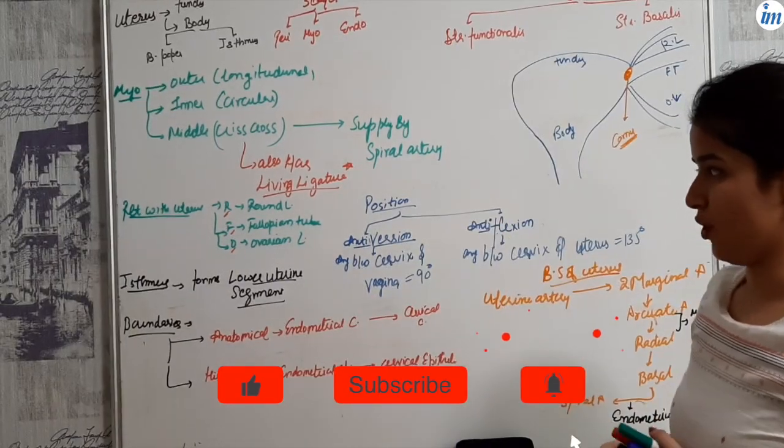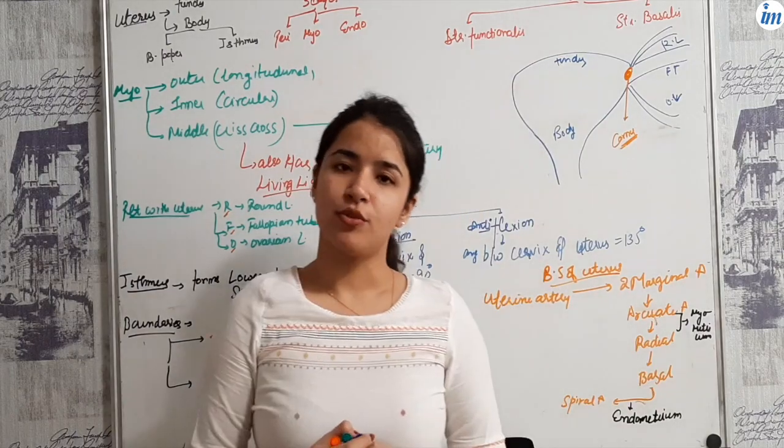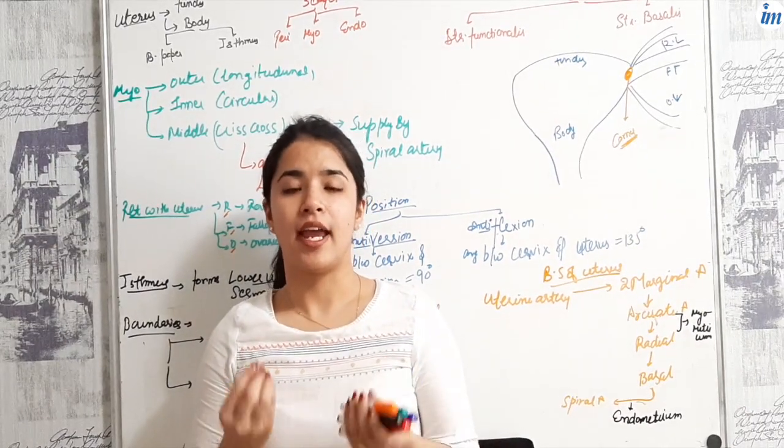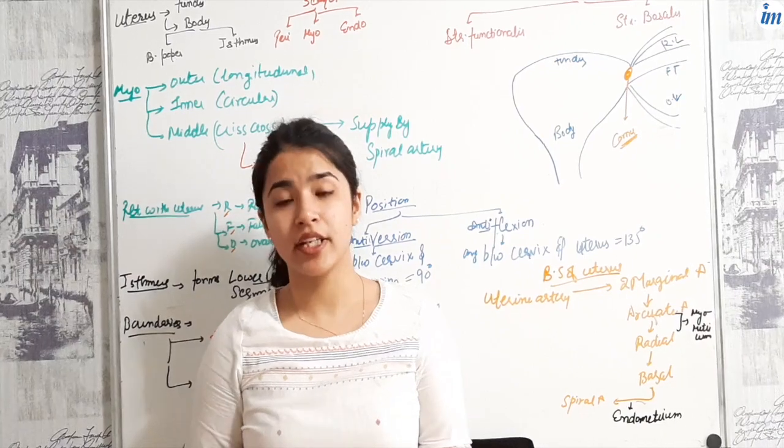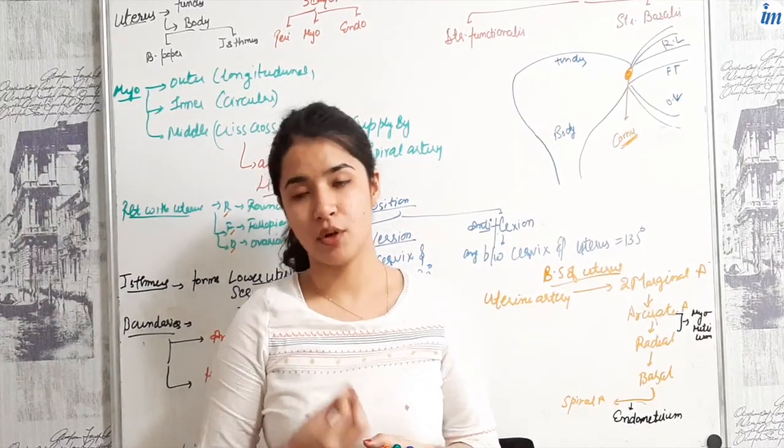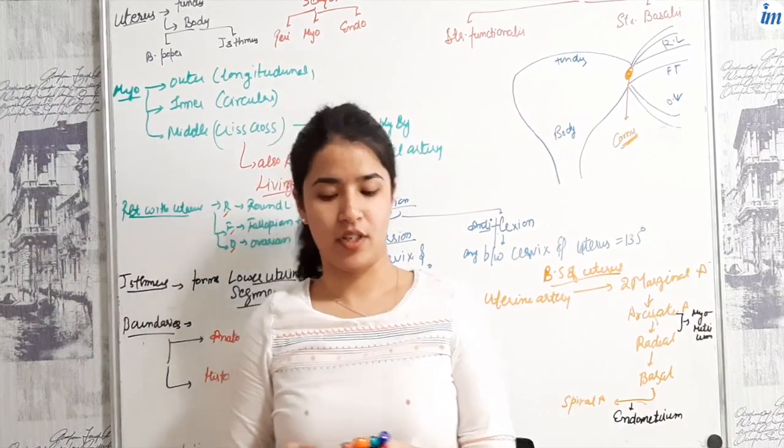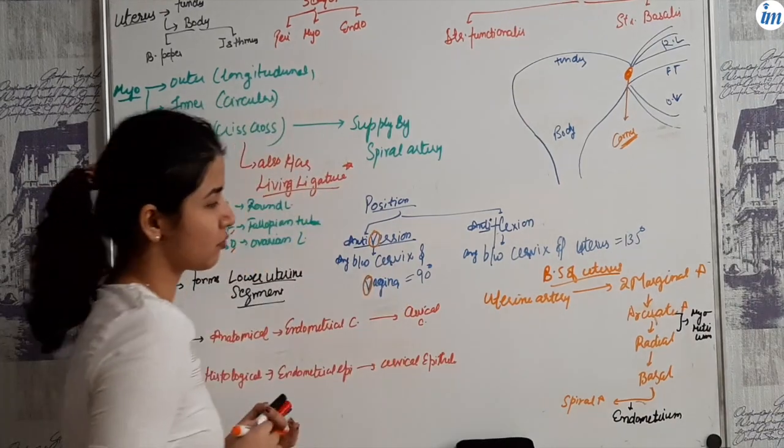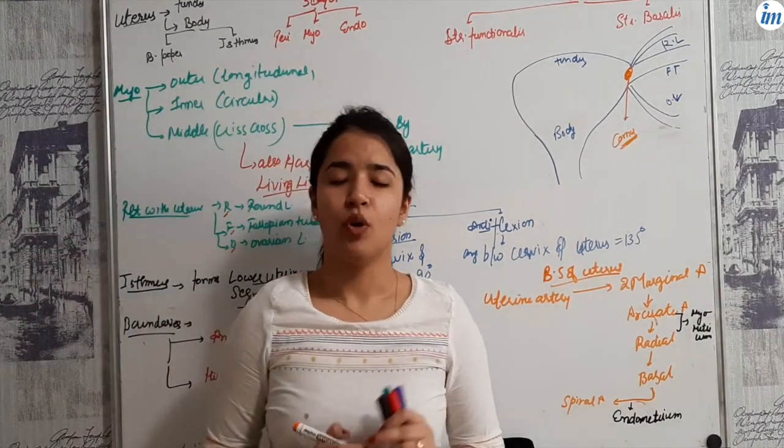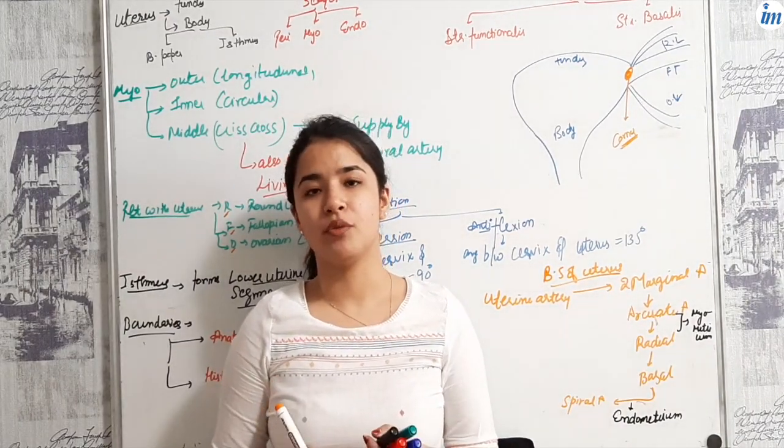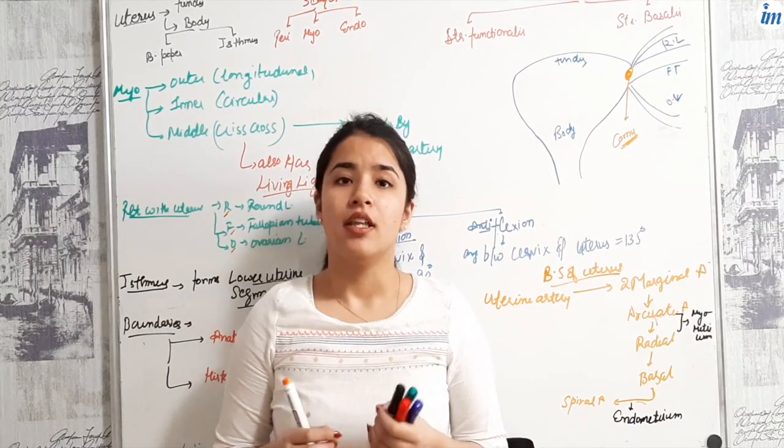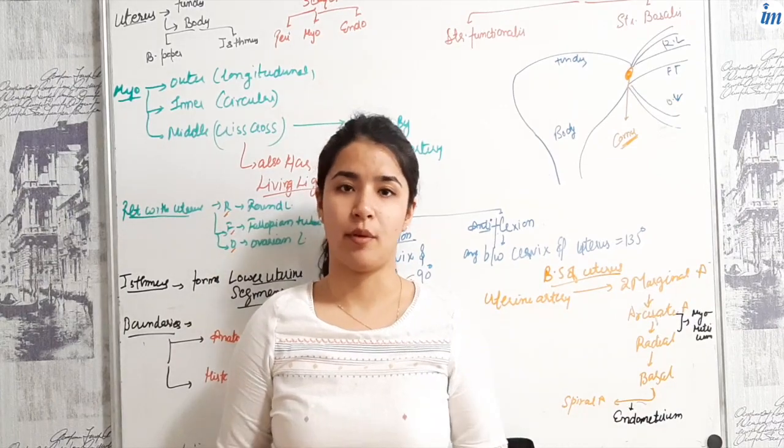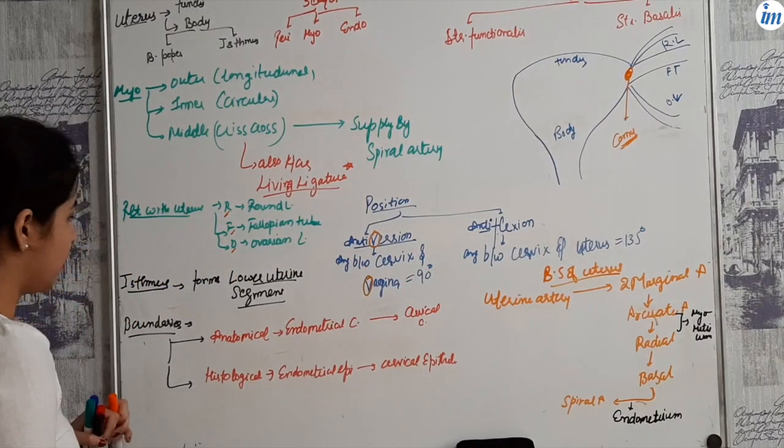About the position of the uterus. Generally, the most common position is anteversion and anteflexion position. Anteversion is an angle between the cervix and the vagina, which is 90 degrees. Anteflexion is an angle between cervix and the uterus, 135 degrees. You can remember: V for version and V for vagina. They ask what ligament is mainly responsible for keeping the uterus in anteversion stage? In non-pregnant women, it is uterosacral ligament, whereas in pregnant women, it is round ligament.